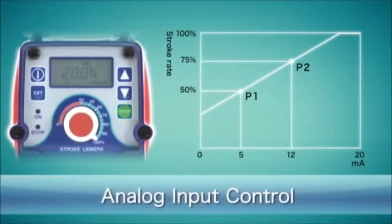Programmable analog control allows control of a pump stroke range between any two arbitrary points of the 0 to 20 milliampere scale.